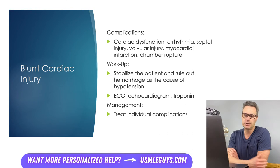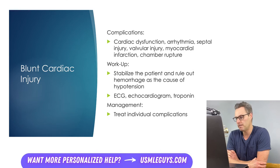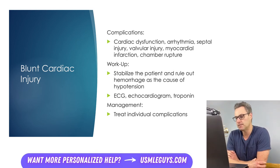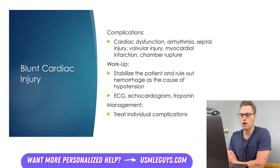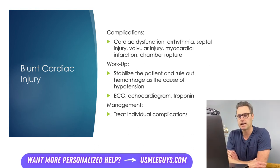An ECG can help us to identify any arrhythmias, bundle branch blocks, or signs of MI. A more in-depth echocardiogram than the one used during the FAST exam to rule out tamponade can be performed if the patient has ECG abnormalities present. Those with signs of MI on ECG will have troponin levels measured as well. Once we figure out what's going on, we sort of follow typical protocol from internal medicine.